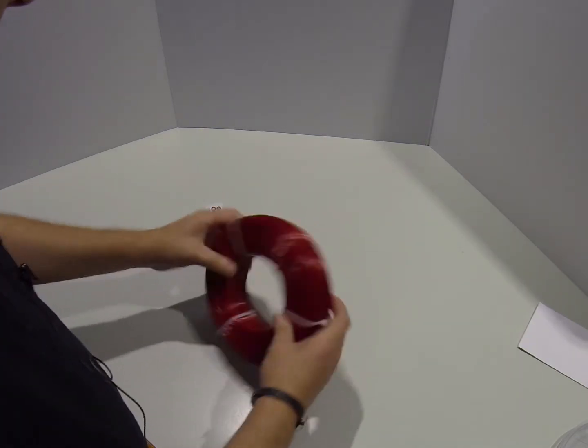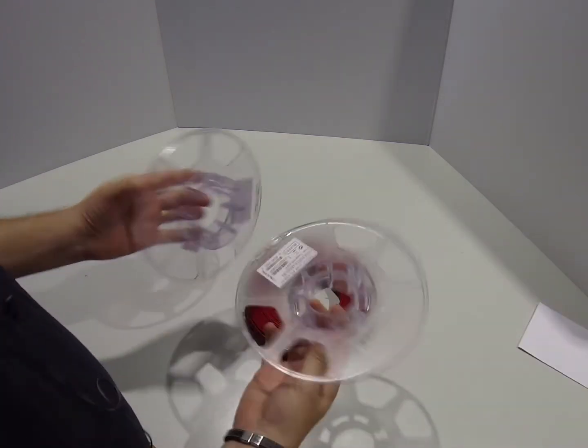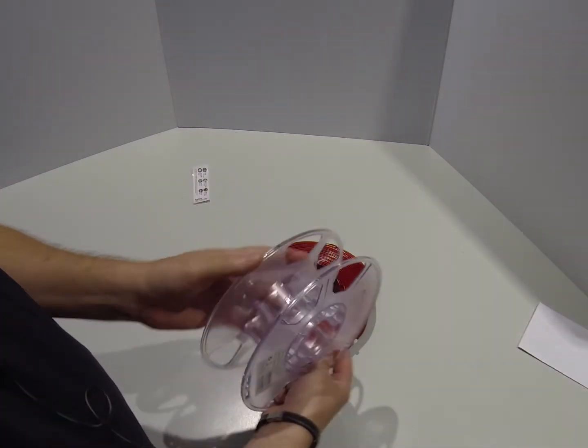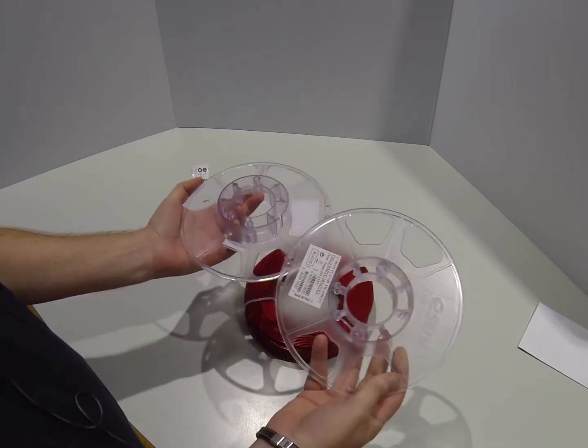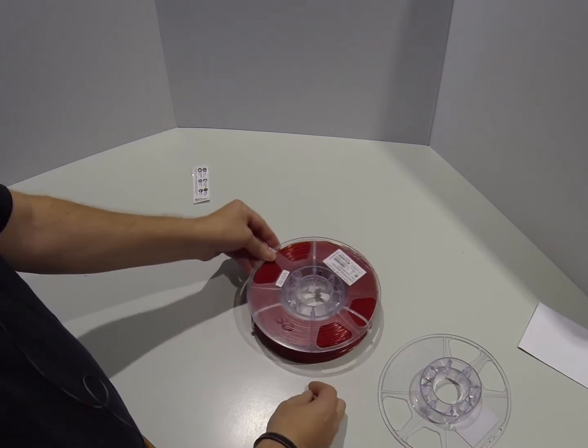So here's the thing. I have some ESUN spools. I figured out that they come apart with a hex head wrench. That's not going to work so well.